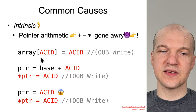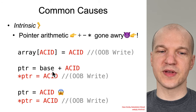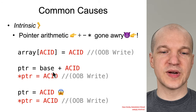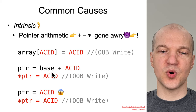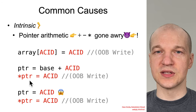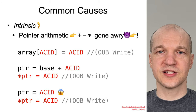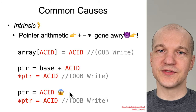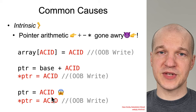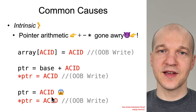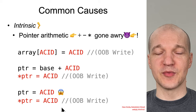Behind the scenes, even array indexing in C is really just pointer arithmetic. So it might also occur that you have base plus attacker-controlled offset going into a pointer, and then attacker-controlled data goes into the dereferenced pointer — and that's an out-of-bound write. In the extreme case, the code may just straight up take a pointer that is attacker-controlled and use it to write into memory. We'll see an example of that in this section.